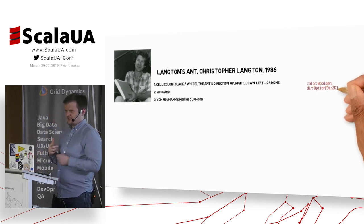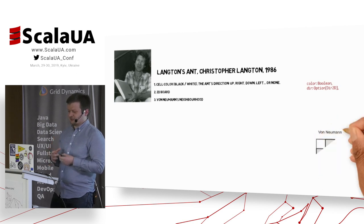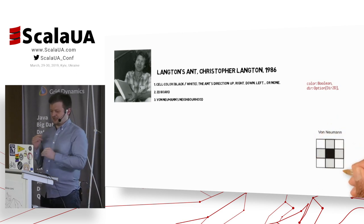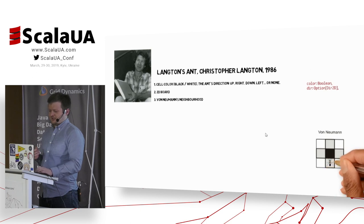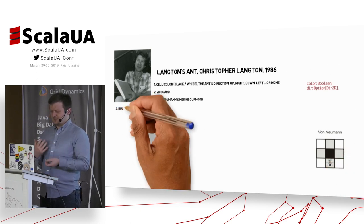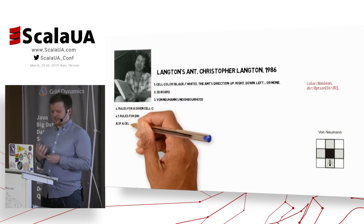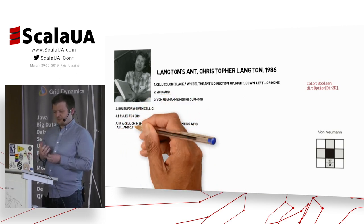The board is, again, two-dimensional. And this time the neighborhood is von Neumann, so it's only up, down, left, right. So yeah, we have only two fields in our case class, the cell of Langton's ant.